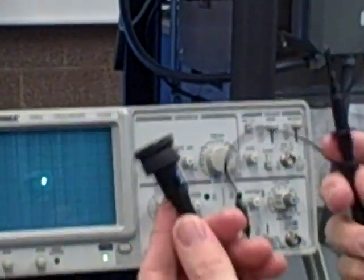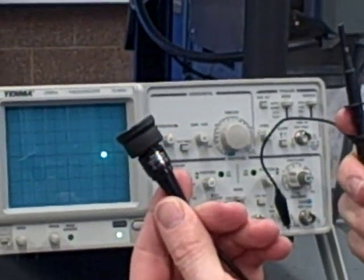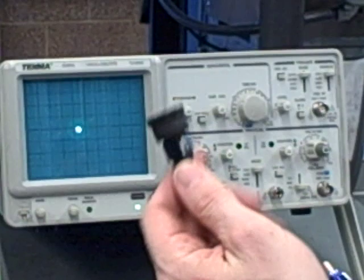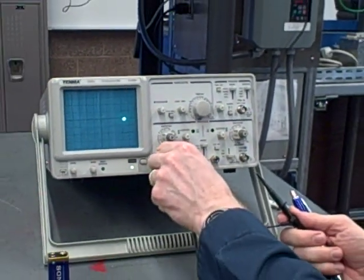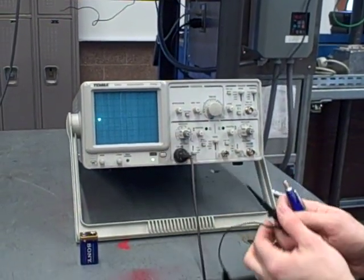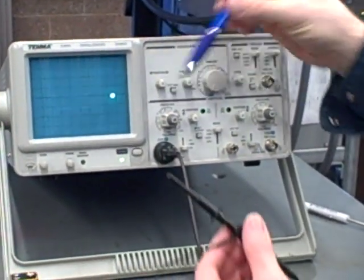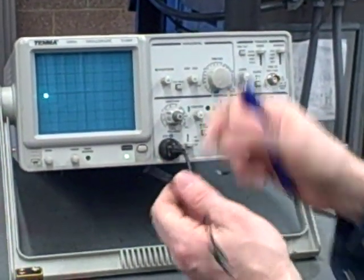So what it does, it performs a ten to one voltage division ratio. Whatever I apply to the probe tip gets divided by a factor of ten before it goes into the oscilloscope. So that means with the volts per division knob set at one-half volt per division, it actually takes five volts applied out here to move up one division.